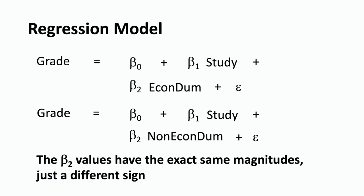The values for beta 2 have the exact same magnitudes — they're just a different sign. For example, if controlling for studying, economics majors on average score eight points higher, then beta 2 in the first model is positive eight, meaning Econ majors do eight points higher than non-economics majors. That means in the second version of the model, beta 2 would be negative eight, because non-economics majors score eight points lower compared to Econ majors, controlling for the amount of studying.